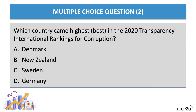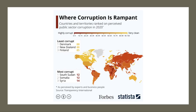Which country came highest — or best — in the rankings for corruption? Was it Denmark, New Zealand, Sweden, or Germany? Well, the best scoring countries were two: Denmark and Sweden were both ranked jointly as the countries with the least corruption in the world. Finland came third. The chart shows countries with the lowest perceived corruption: Denmark, New Zealand, Finland, Singapore, Sweden, Switzerland. And at the bottom: South Sudan, Somalia, Yemen, Venezuela. By the way, the United States only came in 25th, which is quite interesting — quite a lot of anti-corruption concerns in that country.